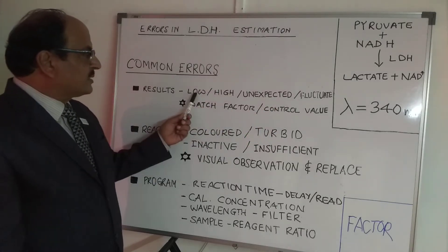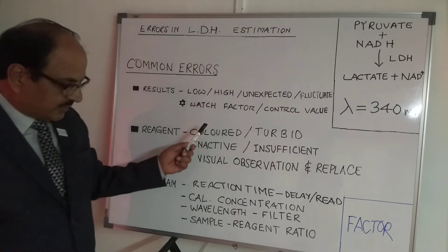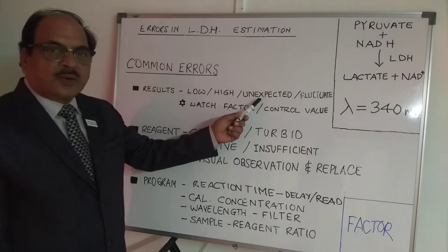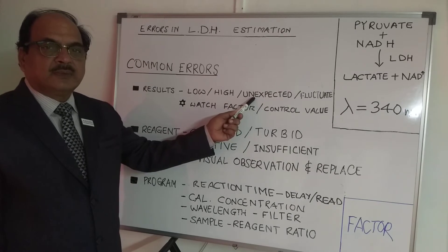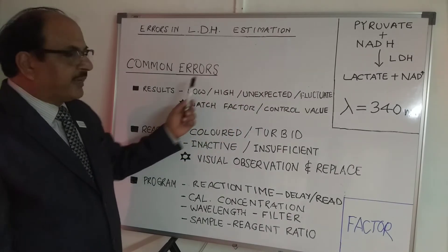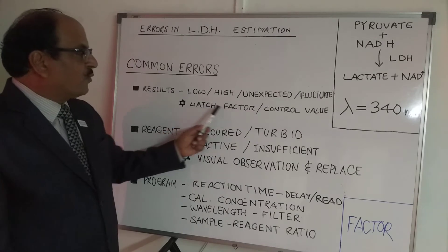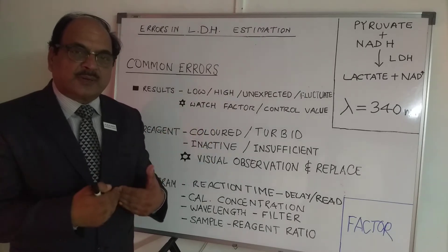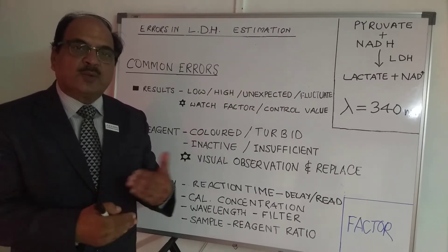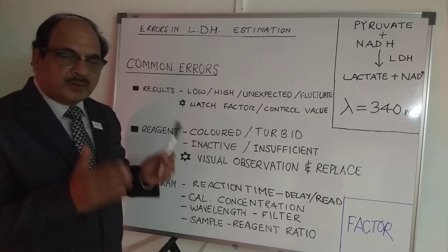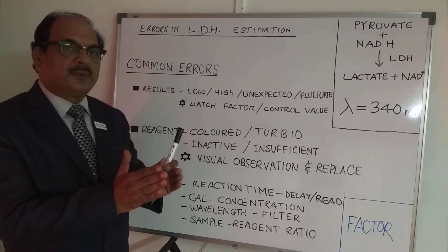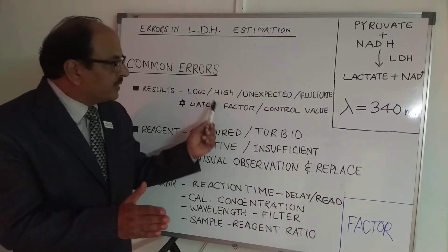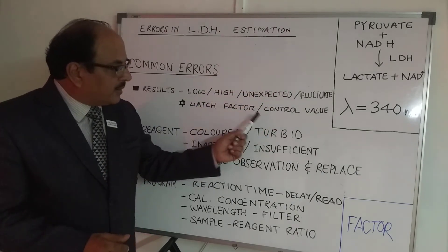Let's take them one by one. Result-oriented errors have four categories: low results, high results, results that are sometimes low and sometimes high, and results not as per the clinician's expectation. To address these, watch your factor. The factor is the concentration of the calibrator divided by the delta absorbance obtained when running the test. This factor should remain more or less constant day to day.